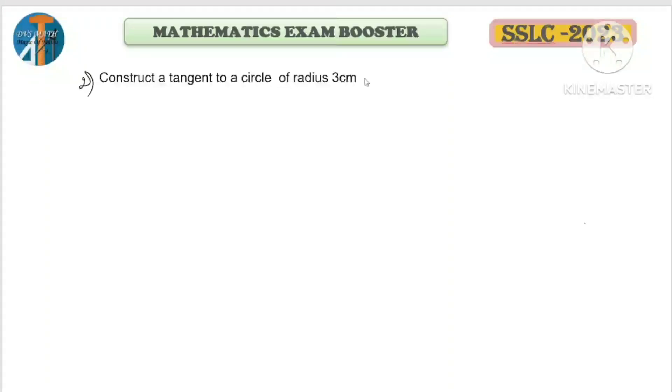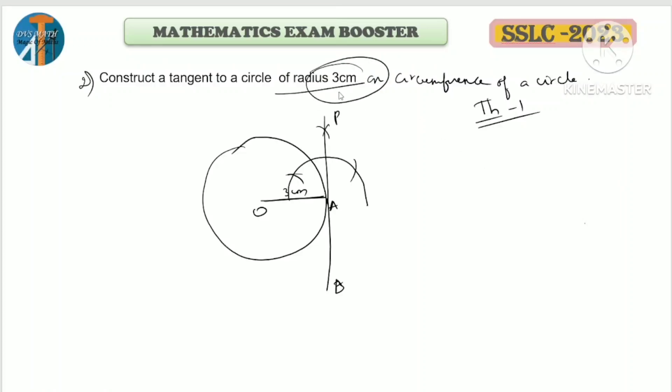Second question: Construct a tangent to a circle of radius 3 cm on the circumference of the circle. Measure 3 cm using your scale or compass. As you know from theorem 1, the radius and tangent are perpendicular to each other. Construct a 90-degree angle. PB or PAB is the required tangent. The figure is the same as theorem 1.